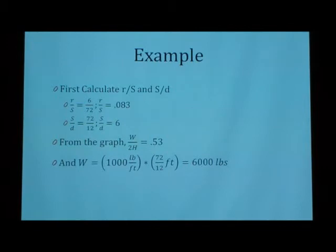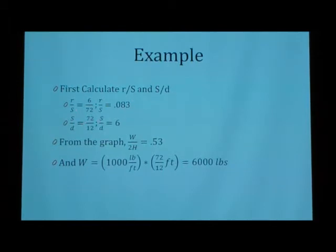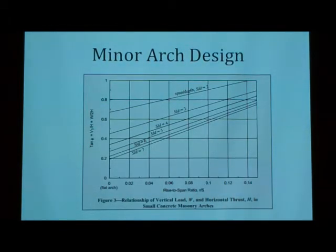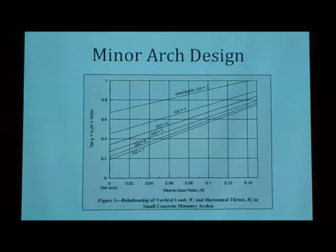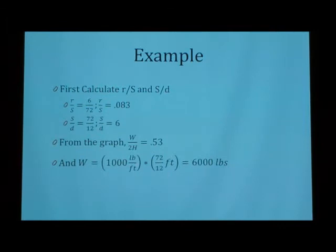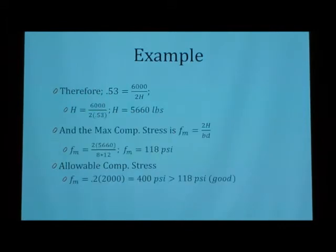The first thing we're going to do is calculate the rise-to-span ratio and the span-to-depth ratio. The rise-to-span is going to be 6 inches over 72 inches, which gives you 0.083. And then the span-to-depth ratio is 6. So, if you go back to the chart, you can use 6 and 0.083, which gives you about 0.53 for W over 2H. So, you can solve for W over 2H now. When W equals 1,000 pounds per foot over 6 feet, it gives you 6,000 pounds. So, you can now solve for H, the thrust, which is 5,660 pounds.